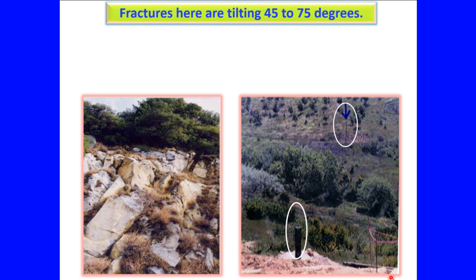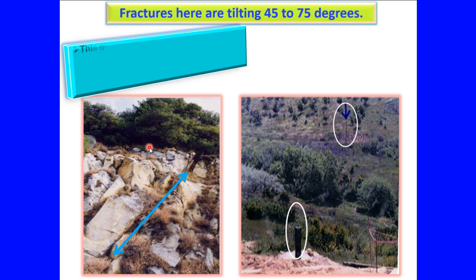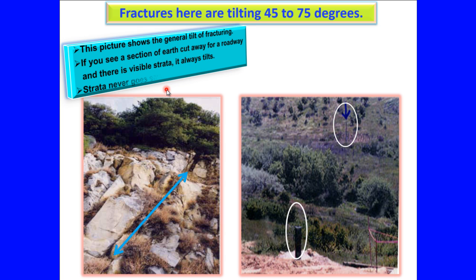Fractures here are tilting forty-five to seventy-five degrees. This picture shows the general tilt of fracturing. If you see a section of earth cut away for a roadway and there is visible strata, it always tilts. Strata never goes straight down into the earth.